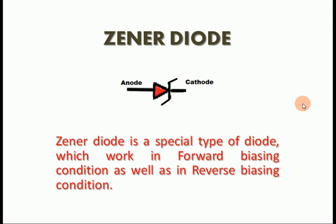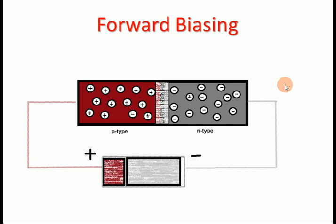The Zener diode is a special type of diode which works in forward biasing as well as reverse biasing. Now let's discuss forward biasing. What is forward biasing? When a PN junction diode is connected to a DC source, that is known as biasing.